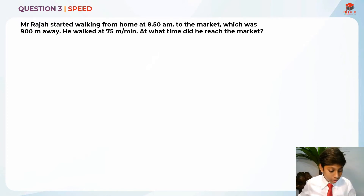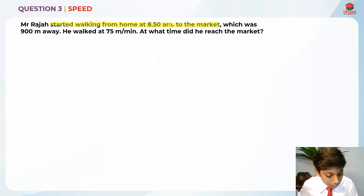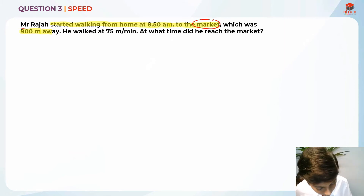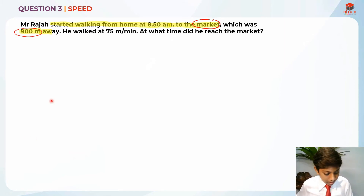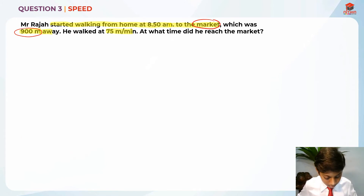Let's highlight the key information. He started walking from his home to the market at 8.50am. The market was 900m away. Let me just circle the market and the 900m. He walked at 75m per minute throughout. And they are asking us: at what time did he reach the market?